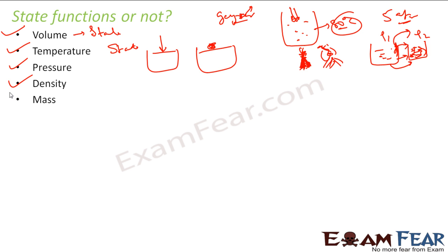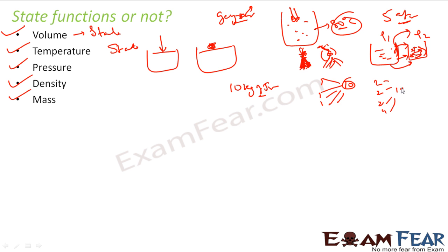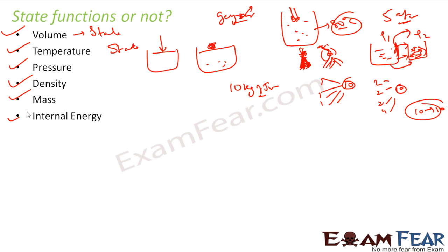Same thing with mass. For example, I want 10 kg of something. Do I care if I got 10 kg from 10 different people each giving 1 kg, or 2 kg from 3 people and 4 kg from one, or the whole 10 kg from my teacher? I don't care how I got the 10 kg. I just care about 10 kg. So mass is also a state function. Similarly, internal energy — do I care how the internal energy is changed? I don't care. I just care about the current internal energy of the system. So internal energy is also a state function.